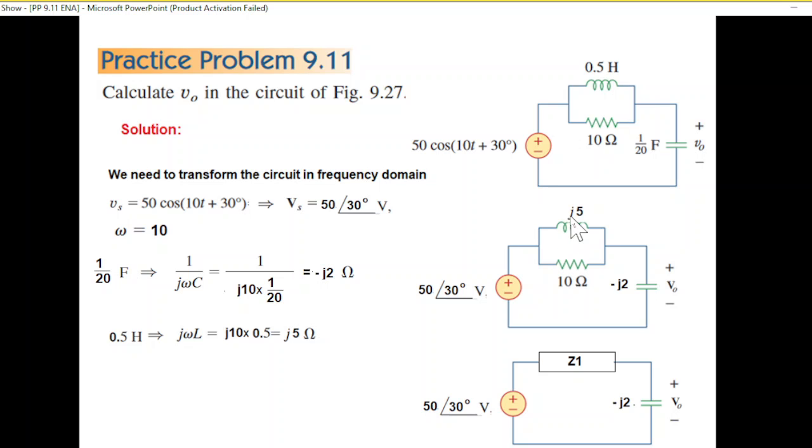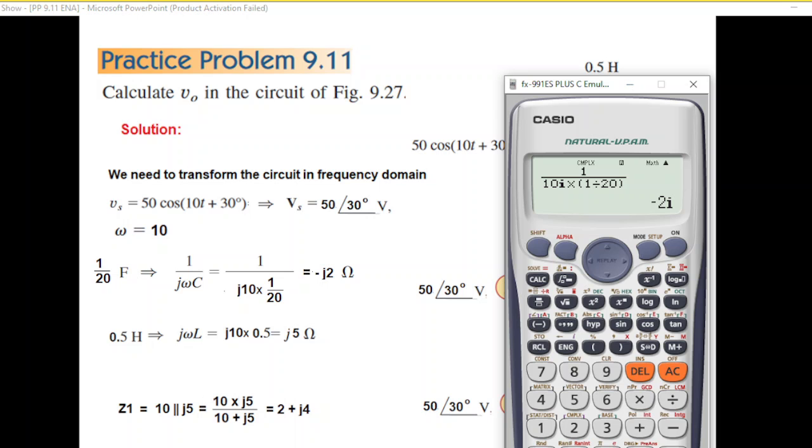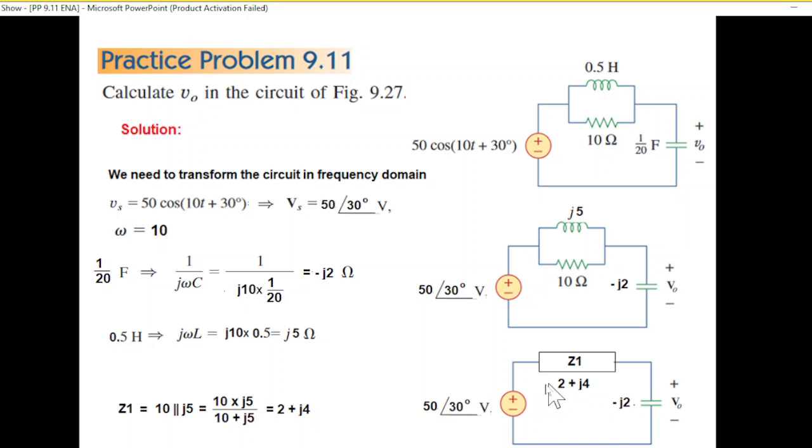The easiest way is to first solve these two in parallel, calling it Z1. Z1 equals 10 parallel j5, so 10 × j5 divided by 10 + j5. Using the calculator with 50j in the numerator and 10 + 5j in the denominator gives 2 + j4.